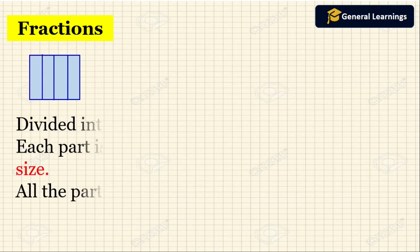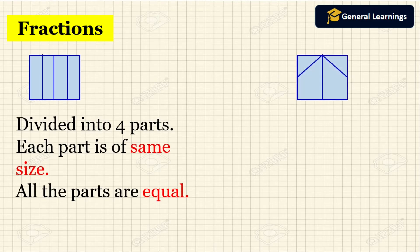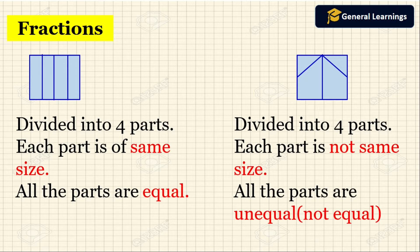Here they have given one picture. This picture is divided into 4 parts, and each part is the same size — all parts are equal — so this will be called a fraction. In another picture, it is also divided into 4 parts, but each part is not the same size. The parts are unequal, so this will not be called a fraction.